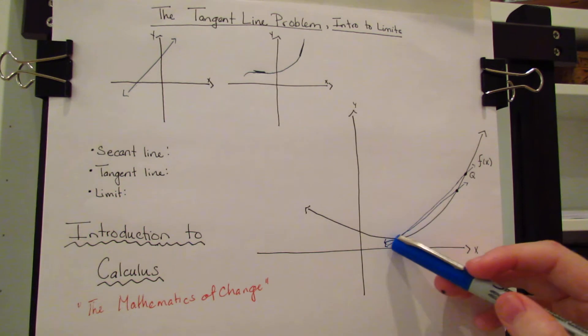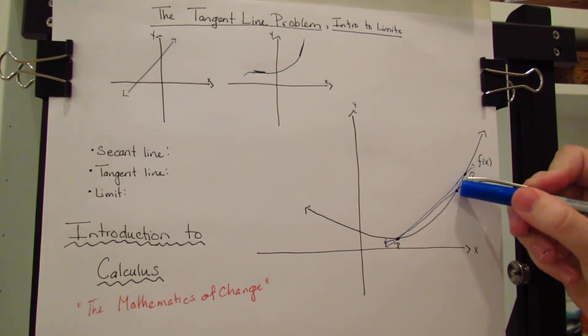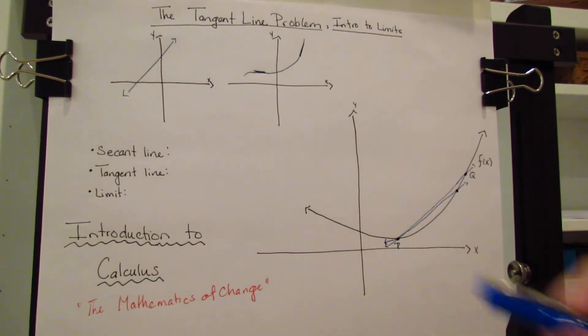See here, P is fairly flat. From P to Q is fairly steep. But if we move Q down here, it gets a little bit less steep. So it's a little closer to P.